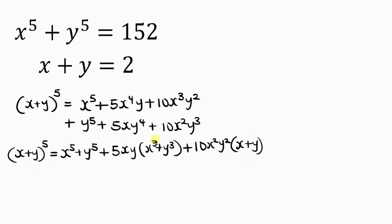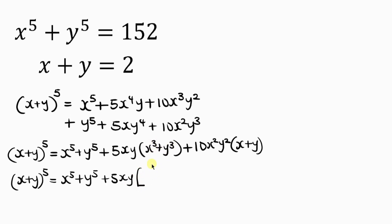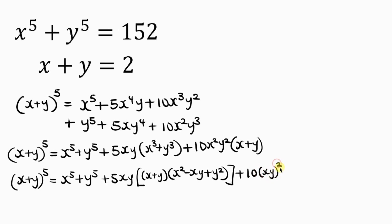We see an expression here that we can further simplify — this is sum of two cubes. So we have x plus y to the power of 5 equal to x to the power 5 plus y to the power 5 plus 5xy times, where x cubed plus y cubed is written as x plus y times x squared minus xy plus y squared. Close the bracket, plus 10xy raised to power 2 times x plus y.